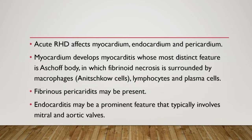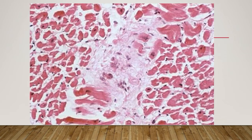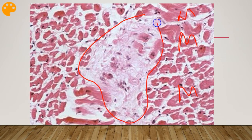Acute rheumatic heart disease affects the myocardium, endocardium, and pericardium — all three layers of the heart. The myocardium develops myocarditis, whose most distinct feature is the Aschoff body. Here is an image of an Aschoff body: the surrounding cells labeled 'M' are myocytes, and in the middle is the Aschoff body.